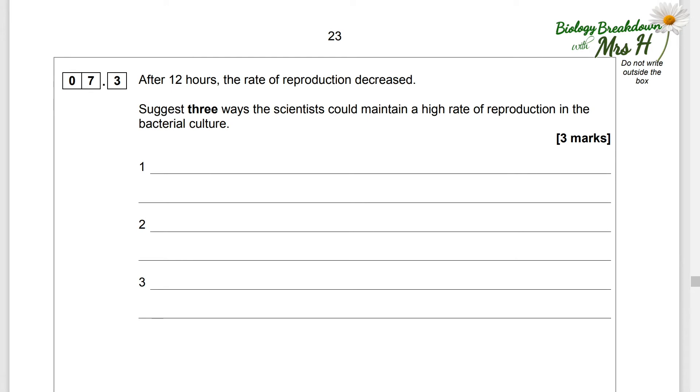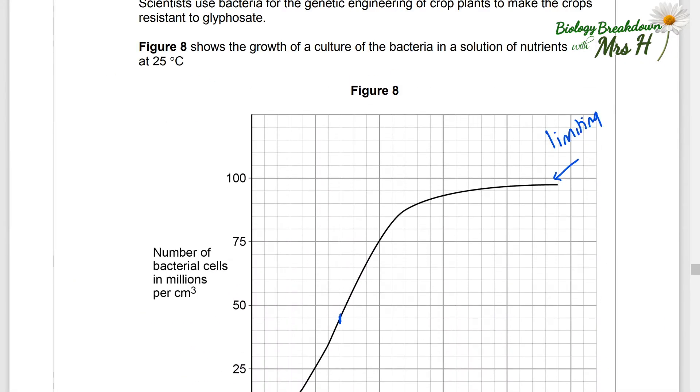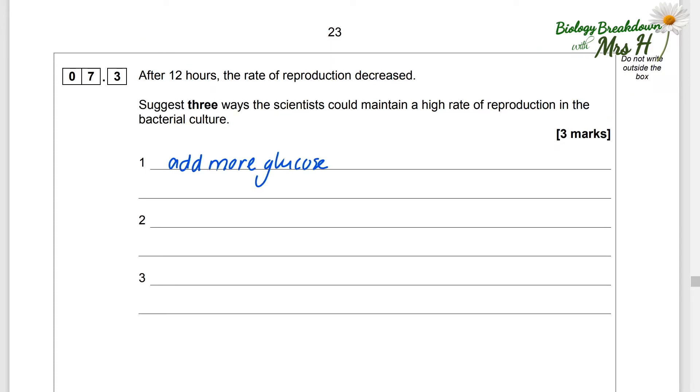After 12 hours the rate of reproduction decreased. So just three ways the scientist could maintain a high rate of reproduction in the bacterial culture. So what we're seeing with this decrease in rate is that when we get to the top end of this curve limiting factors are having a play. So you need to think well what could we provide these bacteria with which would increase the rate of reproduction again? Well we can always add more glucose, add more oxygen and we could increase the temperature as well. We don't want to increase it by too much because we don't want to denature enzymes and kill off the bacteria.